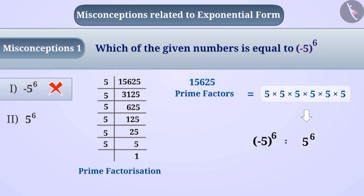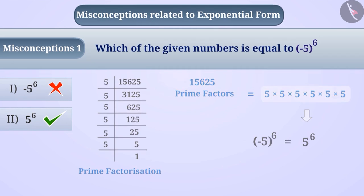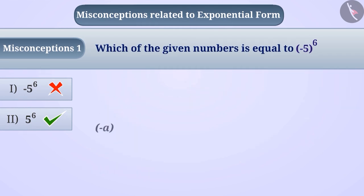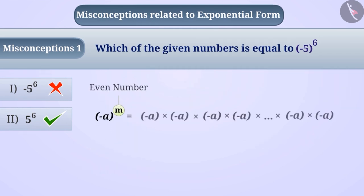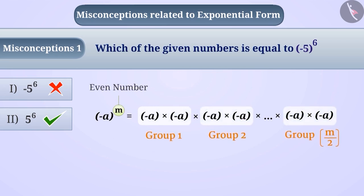The correct answer is option 2. Always remember: if the power of a number minus a is an even number m, we can create m by 2 groups of minus a multiplied by minus a. The result of multiplication of these groups will be positive, and similarly the value of minus a raised to the power of m will also be positive.